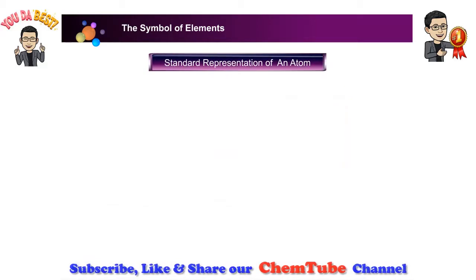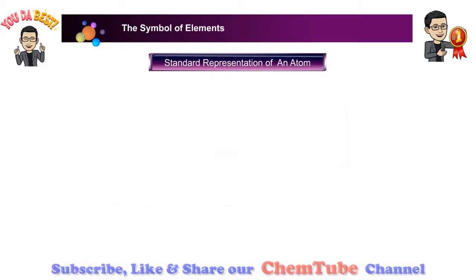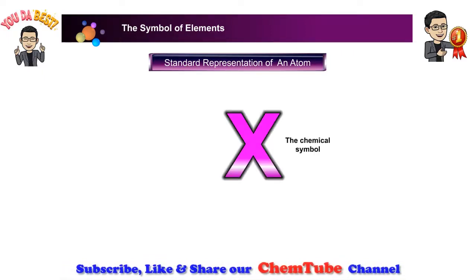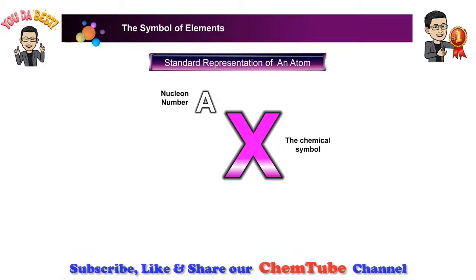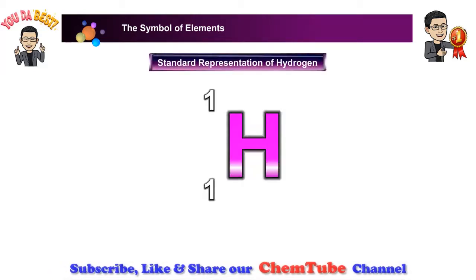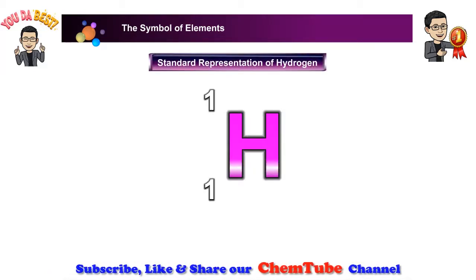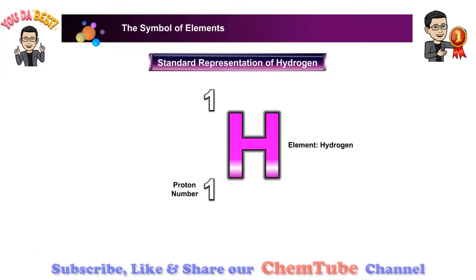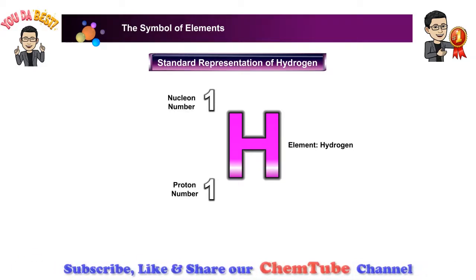Standard representation of an atom. This is the standard representation of an atom. X represents the chemical symbol. A represents the nucleon number. Z represents the proton number. Let us take hydrogen as an example. The proton number and nucleon number of hydrogen is 1.